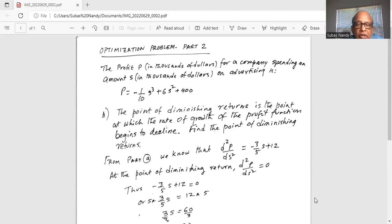From part A, we know that the second derivative of P with respect to S is equal to -3/5 times S plus 12.